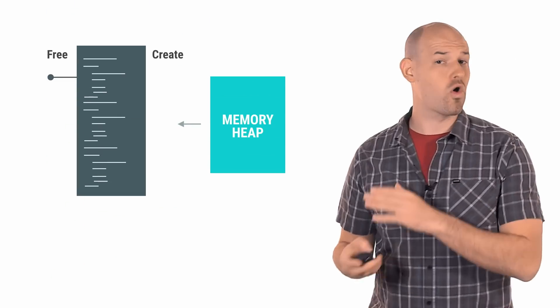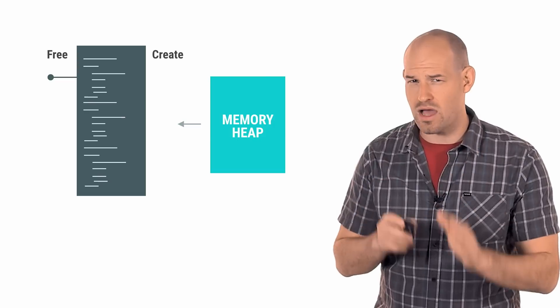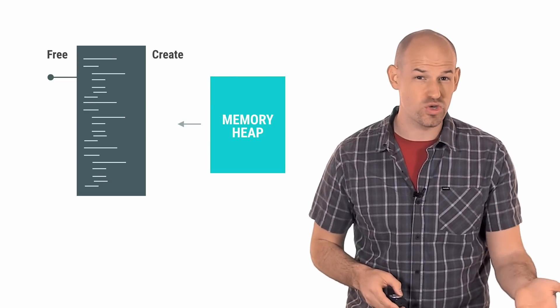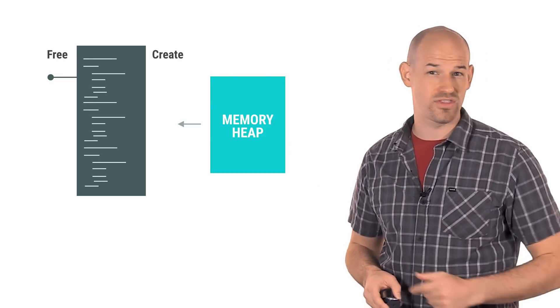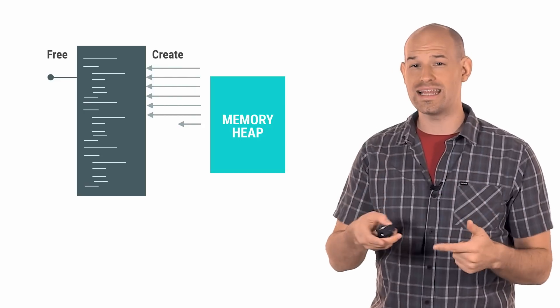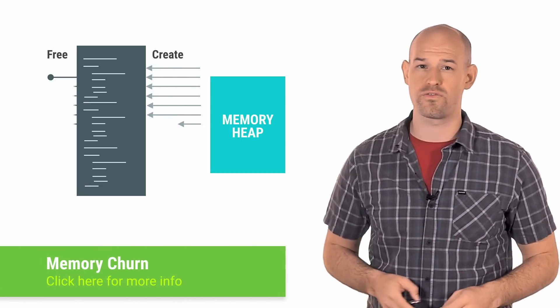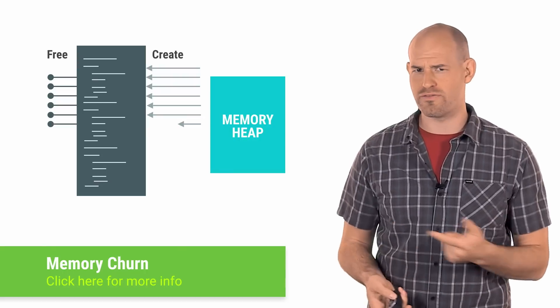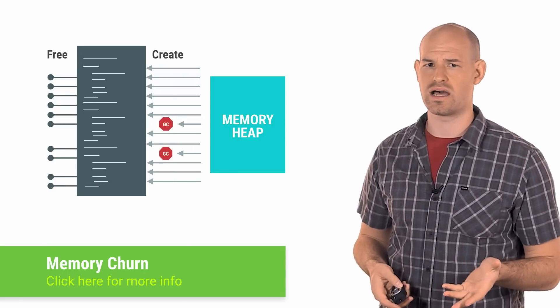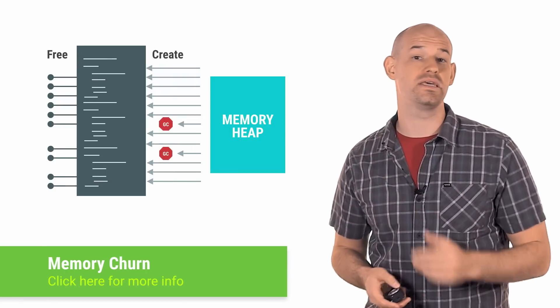Typically, memory churn comes from creating a whole group of temporarily resident objects, like images or views, paint objects, and even threads, that repeatedly get created, exist for a little while, and then are freed. This action ends up polluting and fragmenting the memory heap in a very short amount of time, resulting in more GC events being kicked off.